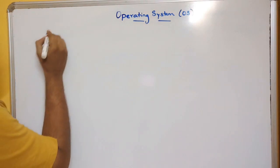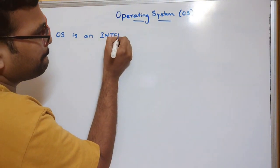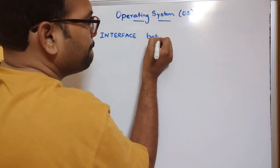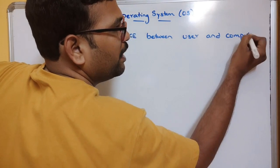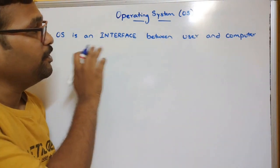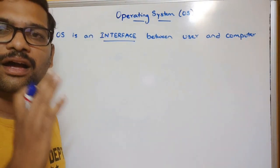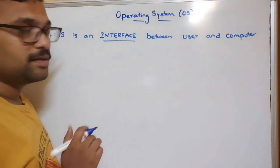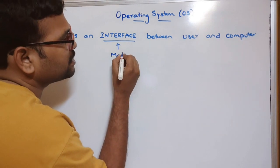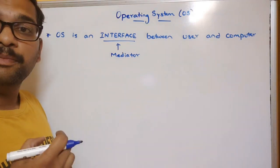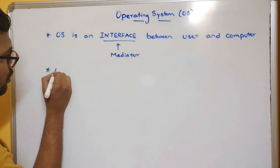The definition of an operating system is: OS is an interface between the user and the computer. For better understanding, interface can be treated as a mediator — which is used for communication between the user and a computer.